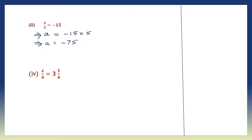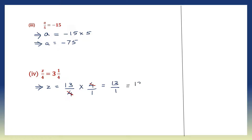Question 4: z by 4 equals 3 and 1 by 4. We are going to solve for z. On the right hand side we have 3 1/4, which we convert to an improper fraction: 4 threes are 12 plus 1, giving 13 by 4. Now we carry 4 from the left to the right — it becomes multiplication. That's 4 by 1, so it's multiplication of fractions. We can cancel 4 and 4. What is left is 13 by 1, which is 13. So the value of z is 13.